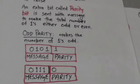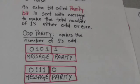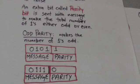For even parity, the parity bit makes the number of ones even. At the destination, the message including the parity bit is checked to see if it contains an even number of ones or not. If the number of ones at the destination is not even, then it means there is some error in the message.